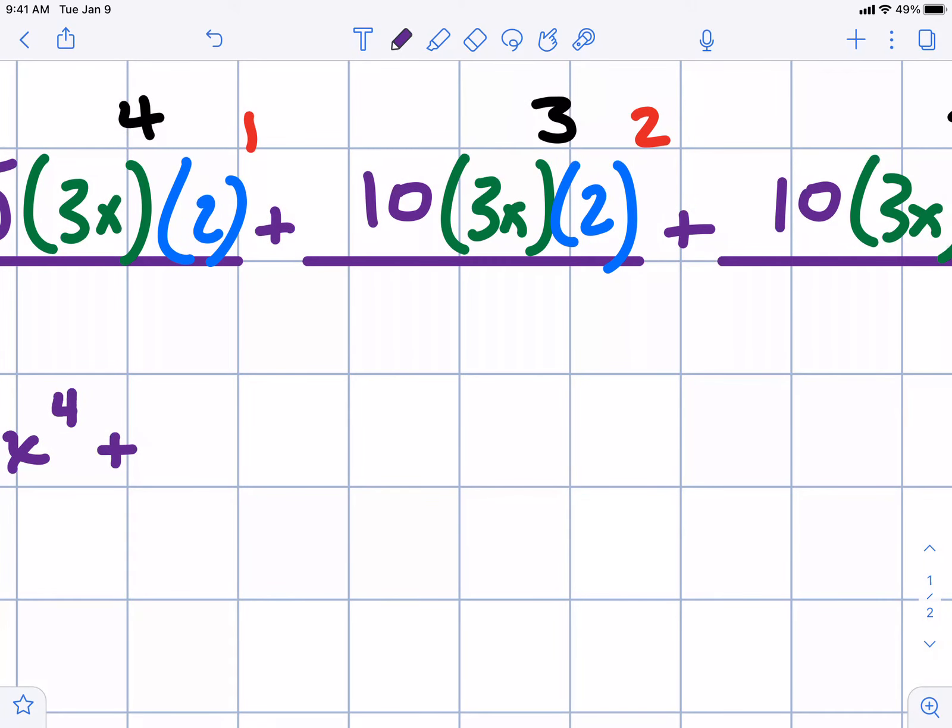3 to the third. In our next one, we have 27. We have 4, we have 10, that's going to be 40. 27 times 40, we're going to get 1080. 1080x cubed.